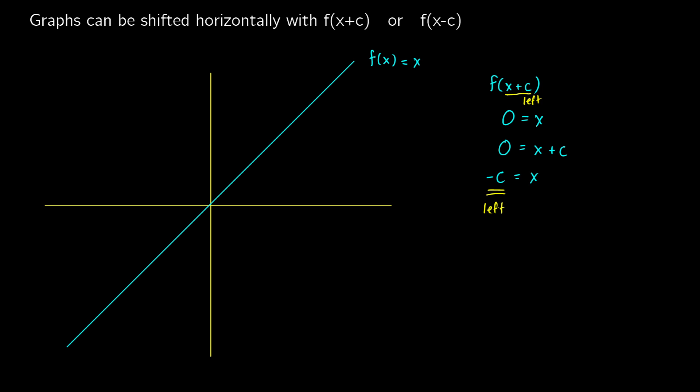So if we graph f of x equals x plus c and we pick f of x plus 2, this means we're going to be shifting the graph two units to the left. If we put in values — negative one, negative two — our crossing point should be about there. So if we draw this in, we would get a graph that looks like this. It looks very similar to what we did before, but we're focusing on that shifting left component.